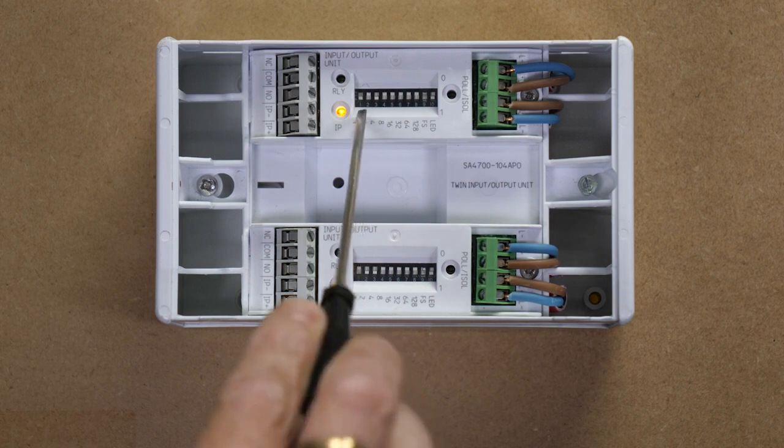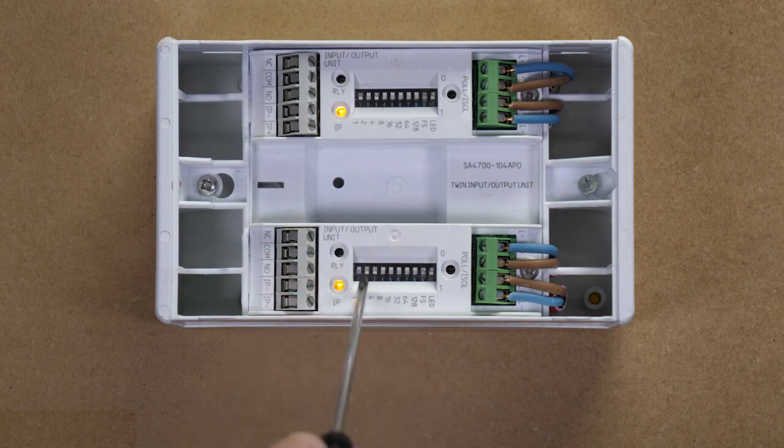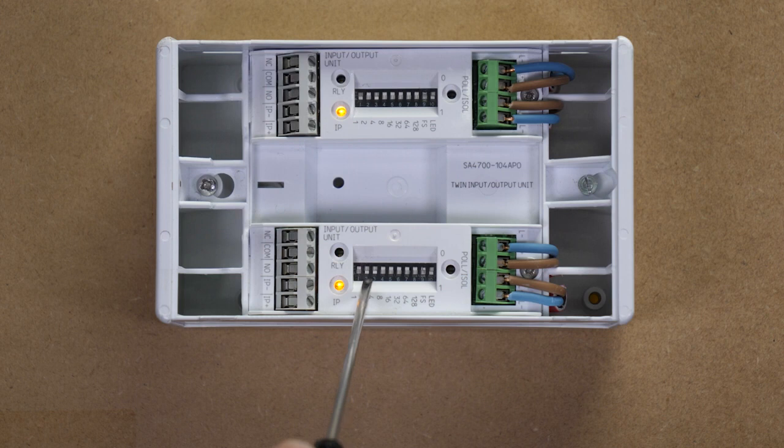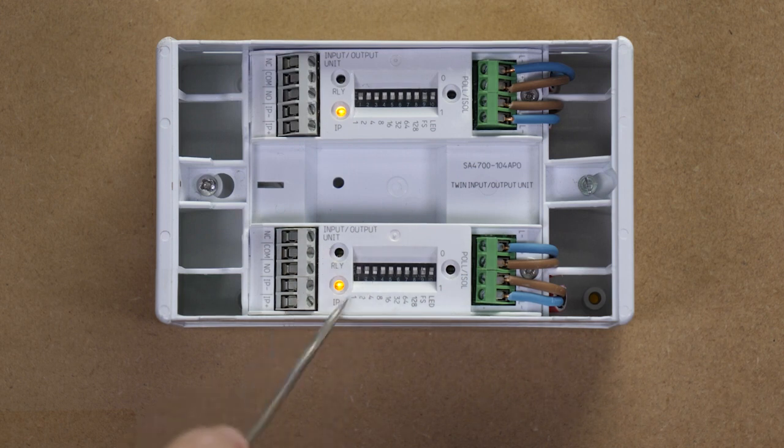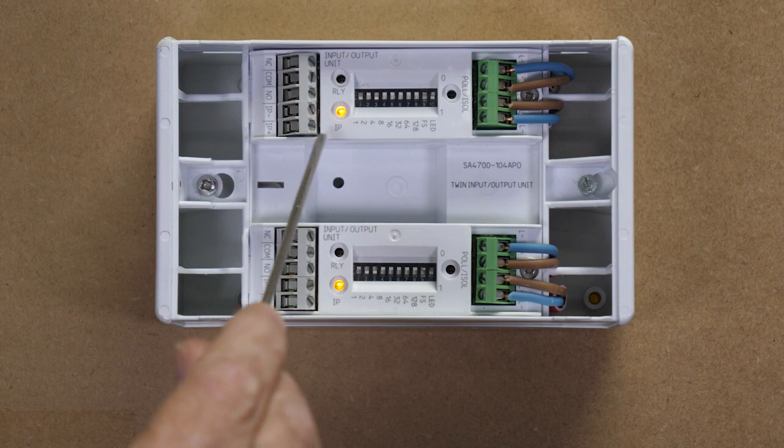Once you've addressed the units you will notice a fault light is activated on the input side. You will have to ensure that the LED switch is switched on when commissioning.